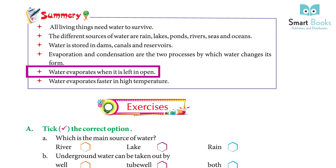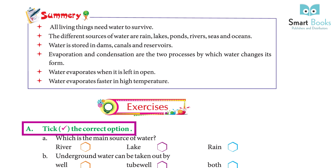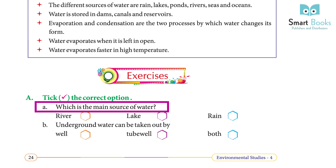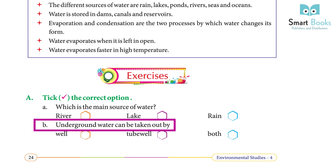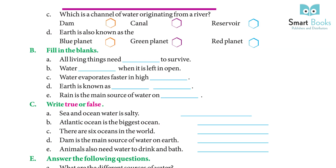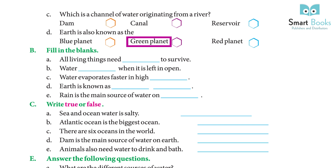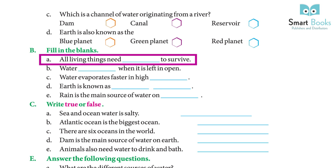Exercise A — Choose the correct option: (a) Which is the main source of water? Answer: Rain. (b) Underground water can be taken out by? Answer: Both well and tube well. (c) Which is a channel of water originating from a river? Answer: Canal. (d) Earth is also known as the? Answer: Blue planet.